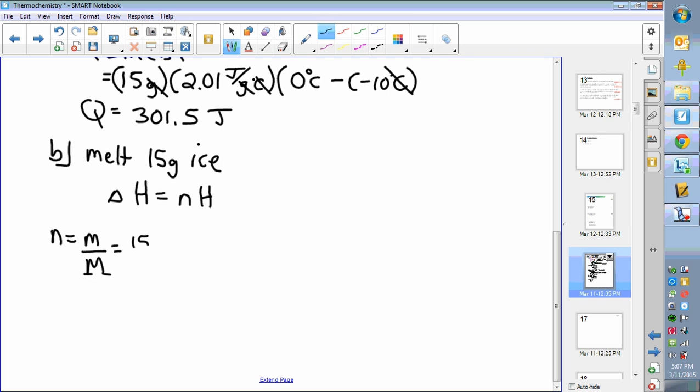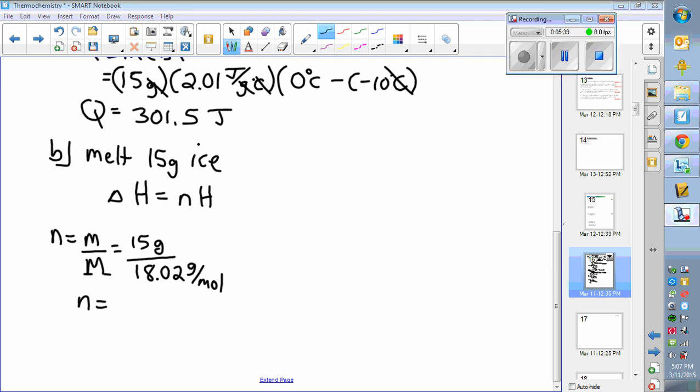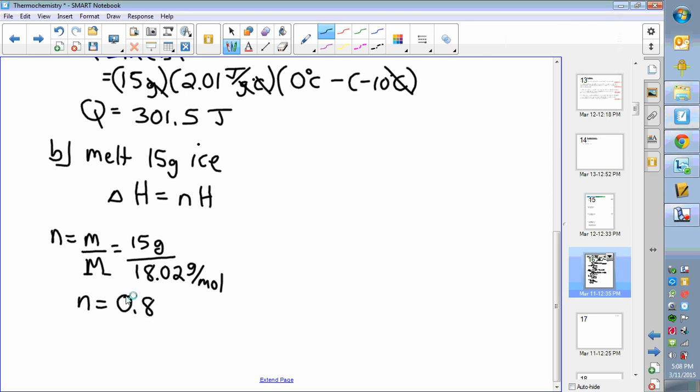So we have 15 grams of ice divided by the molar mass of water which is 18.02 grams per mole, and that will give us a number of moles which we'll calculate out—I'll pause it—getting 0.832 moles. So now that we know n, we can calculate for ice what our enthalpy is. We need to look up the molar enthalpy of fusion for water and you get 6.03.